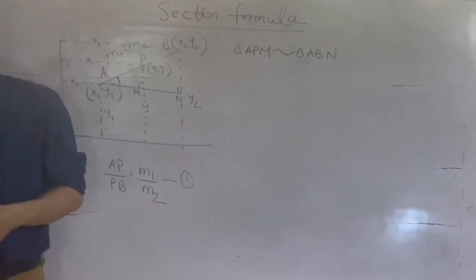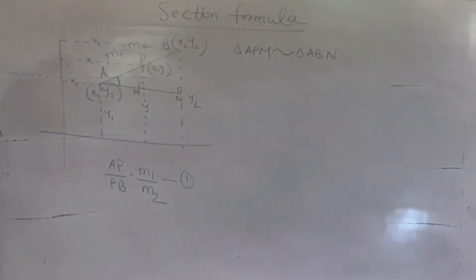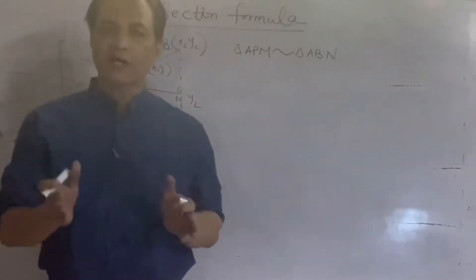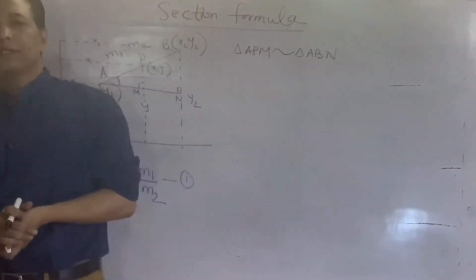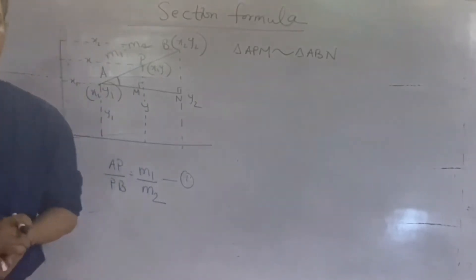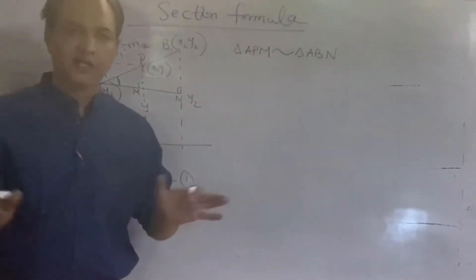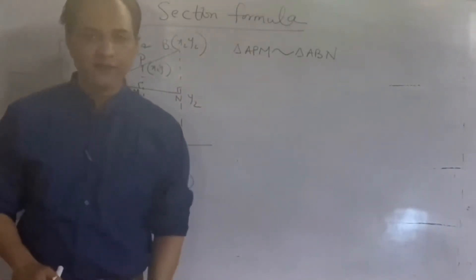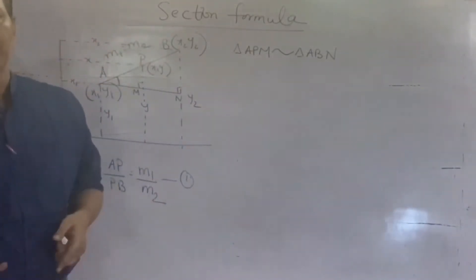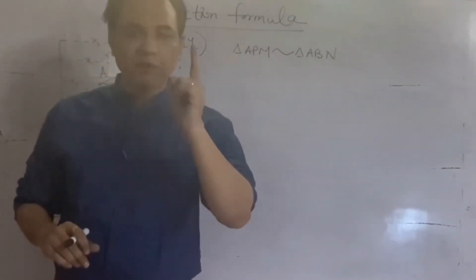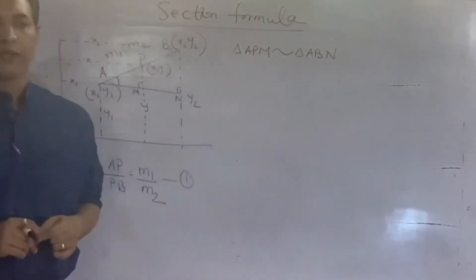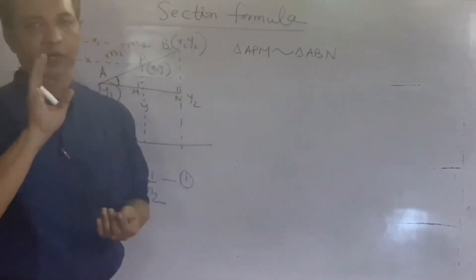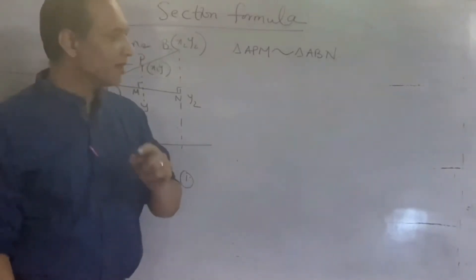Similarity का concept — हमने congruence 9th class में पढ़ी है, similarity इसी साथ detail में पढ़ोगे। थोड़ा idea दे देता हूँ — दो triangles में यदि दो angles equal हों तो ऐसे triangles similar triangles कहलाते हैं। हमने देखा कि छोटे वाले triangle और बड़े वाले triangle में दो angles equal आ रहे थे, therefore they are similar। Congruent triangles की property है CPCT — corresponding parts of congruent triangles — मतलब सारी sides, सारे angles सब कुछ equal होता है।